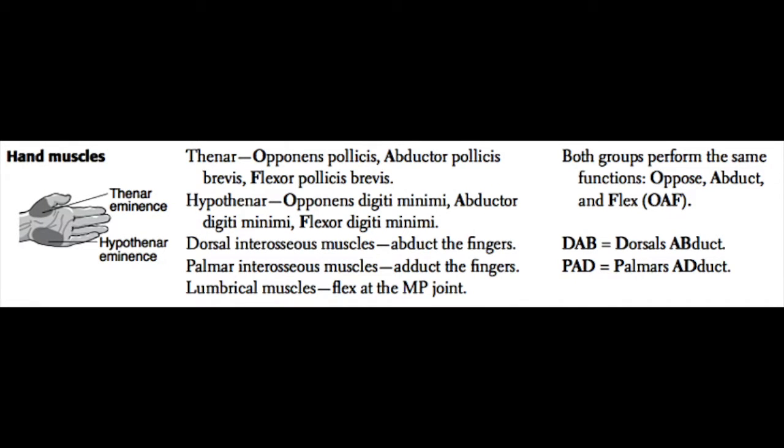First, we have the hand muscles. You don't need to obsess over the details for Step 1, but you should know some basics. The thenar eminence is a group of muscles controlling the thumb — it's the pad of muscle that sits just below your thumb. It's composed of opponens pollicis, abductor pollicis brevis, and flexor pollicis brevis.